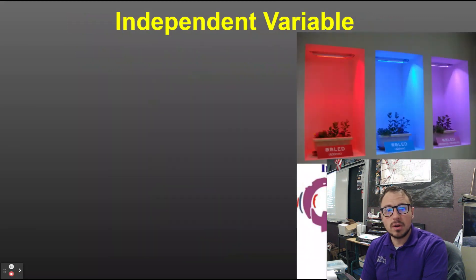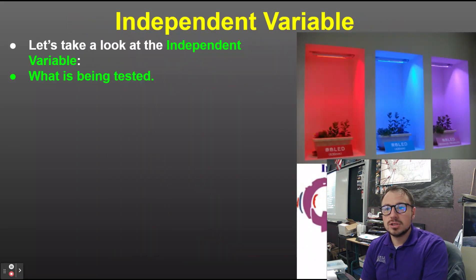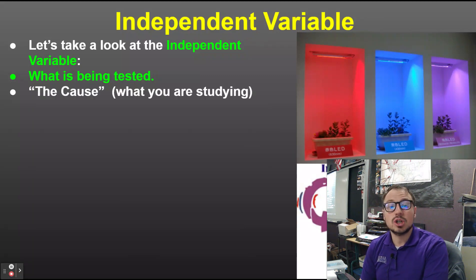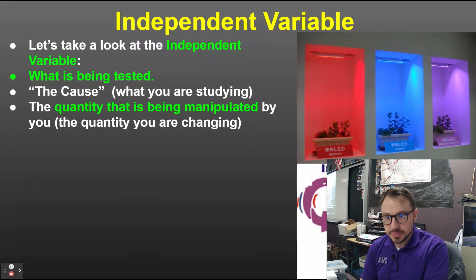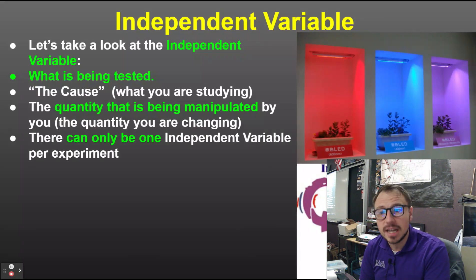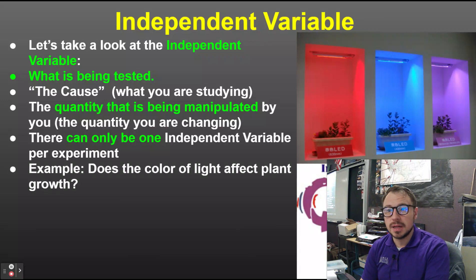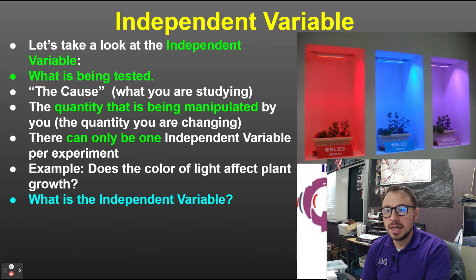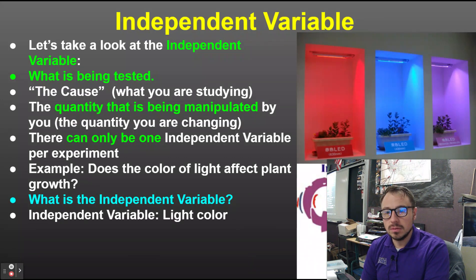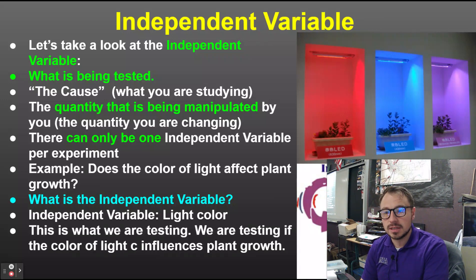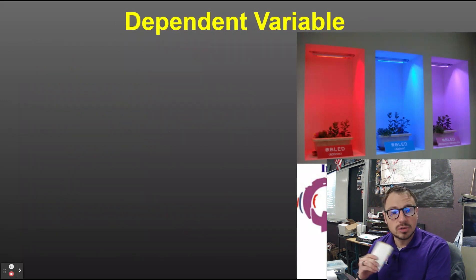What are the scientific variables? The independent variable is what is being tested — it's the cause, what you are studying. It's the quantity being manipulated by you, the quantity you are changing. There can only be one independent variable per experiment. For example, in the question 'Does the color of light affect plant growth?' the independent variable is the light color — that's what we are changing and testing in this experiment.